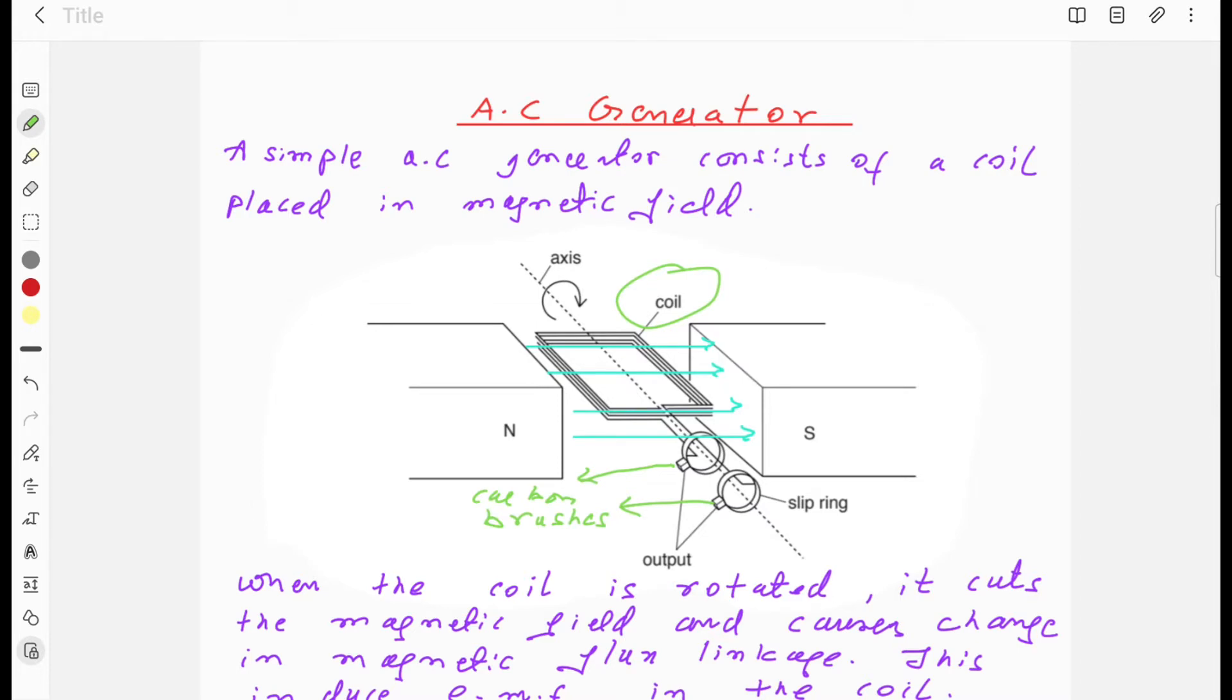You can see the magnetic field going from north to south. You can see slip rings which are connected with the coil. They will rotate along with the coil. You can see carbon brushes providing contact between the external circuit and slip rings.